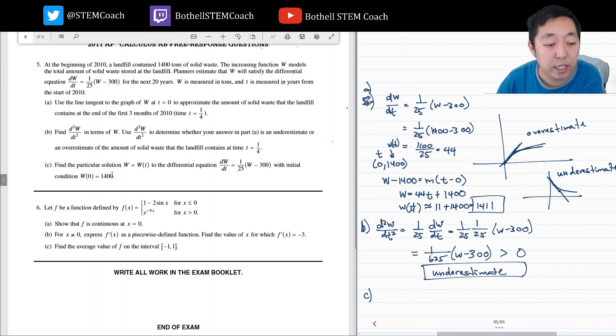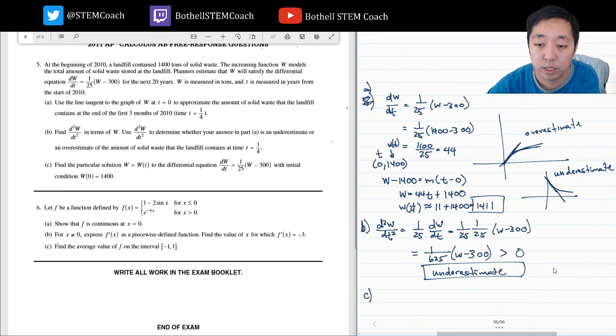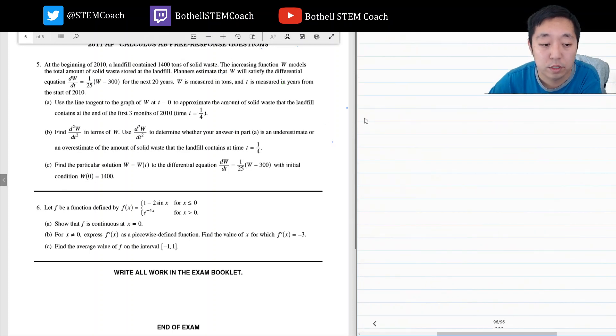Find a particular solution to the differential equation with initial condition W of zero. So now we're going to just solve this differential equation. I'm going to do it on the next page because I'm running a little bit out of space. So this is the equation, dW/dt is equal to 1 over 25 times W minus 300. In calculus AB, there's only one way you know to solve differential equations, and that's separation of variables.